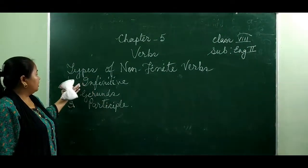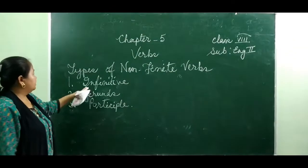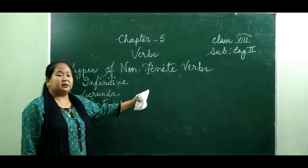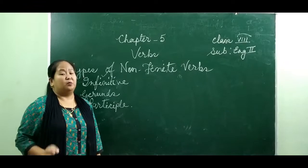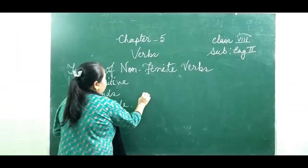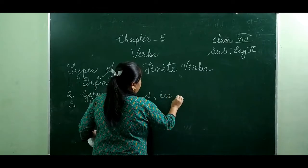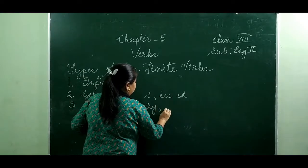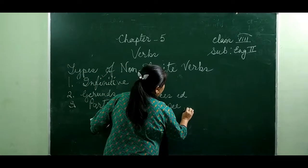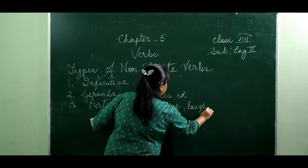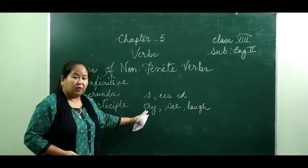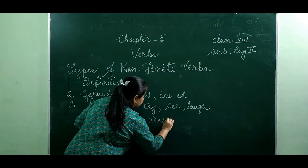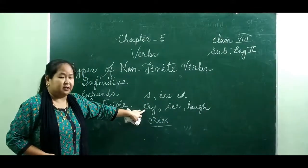Types of non-finite verbs: they are infinitive, gerunds, and participle. What are infinitives? Infinitives are the basic form of verb — the root form of verb, or verb without 's', 'ies', or 'ed.' For example: 'cry,' 'see,' 'love.' This is the basic form of verb. If we use this verb in third person singular number, we get 'cries' — that is not infinitive. The root form of verb is the infinitive.